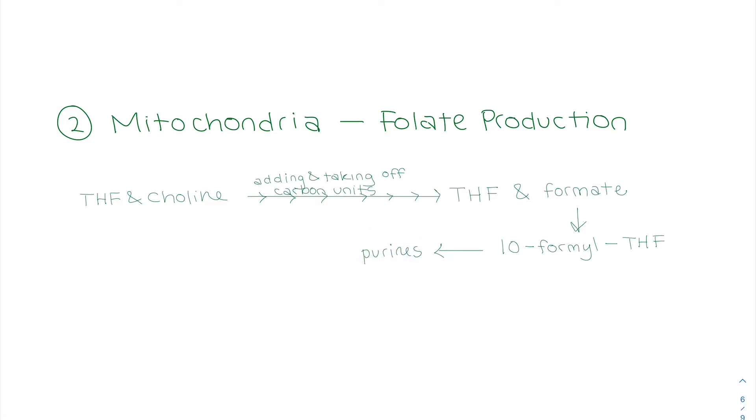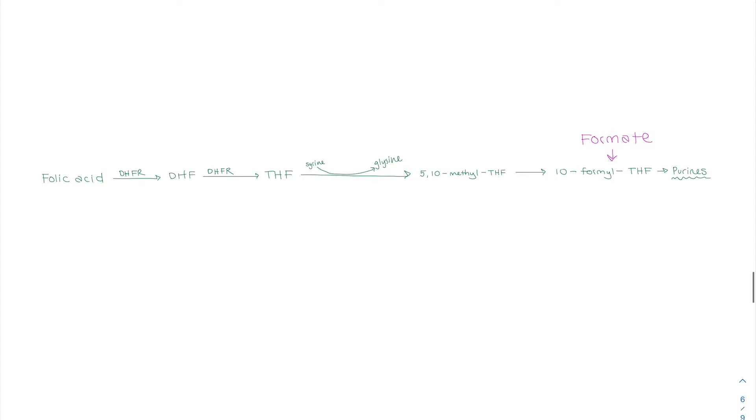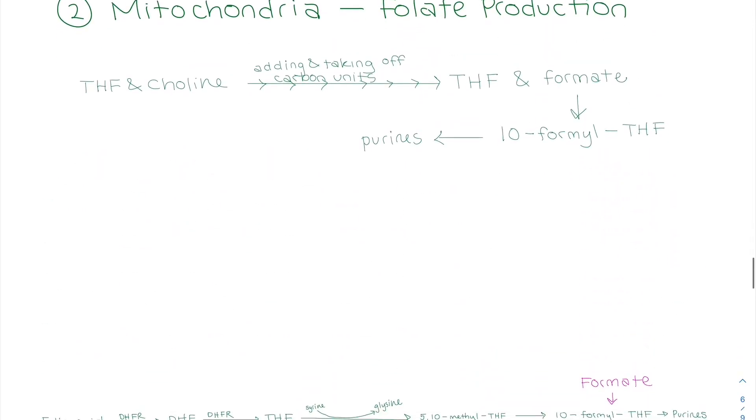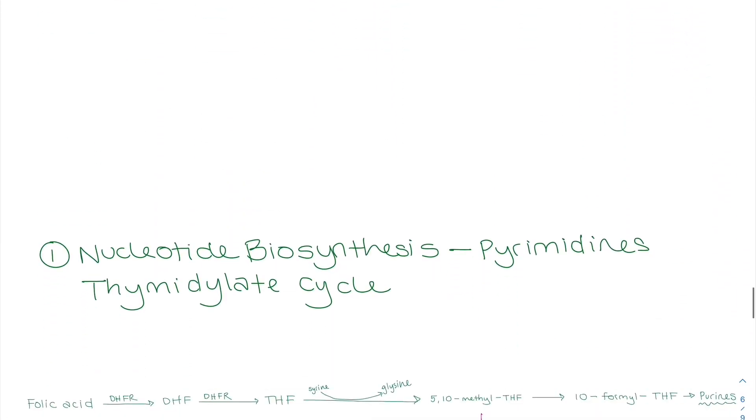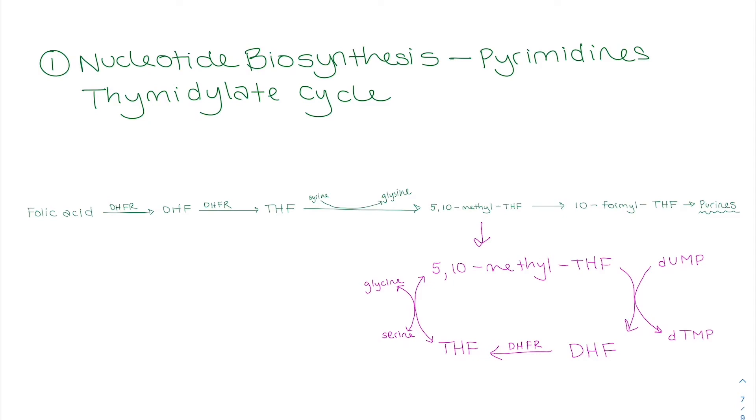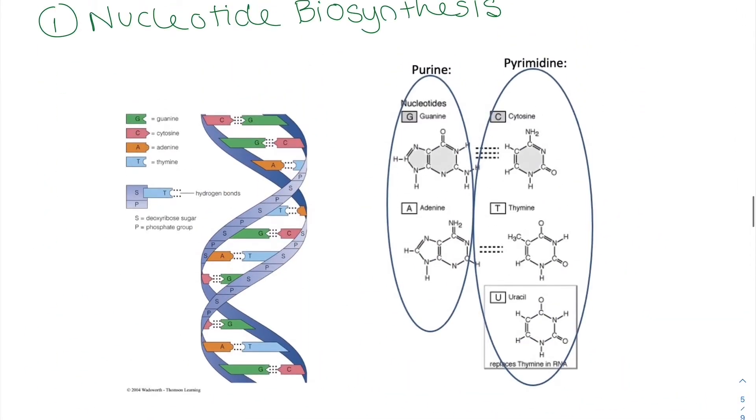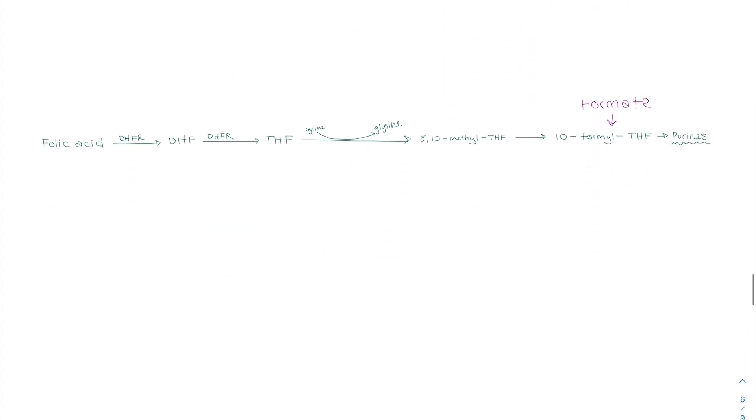Kind of connecting back to that linear image that I showed you, this is all that's happening. We're able to get formate to come into this reaction. You have the tetrahydrofolate, choline, a bunch of stuff is happening, and then we get the folate that goes into this reaction. Now we've made purines. Awesome. We also need the pyrimidines, the cytosine and the thymine. We'll also talk about uracil.